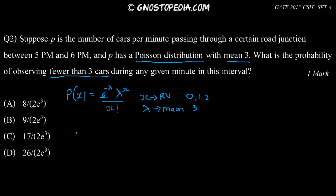Hence, substituting these values in Poisson distribution, we get p of x is equal to p of 0 plus p of 1 plus p of 2, where x is less than 3.